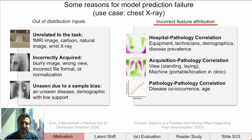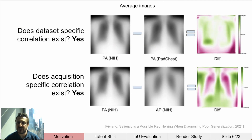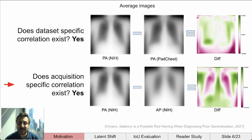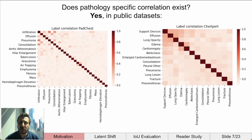We can see examples of dataset-specific correlation by looking at average images from the NIH and the PadChest dataset. Also, within a single dataset, we can see how the acquisition projection can be seen as well. It is very likely that patients that cannot stand up for a PA typically have more pathologies present. We also see correlation between labels in public datasets.